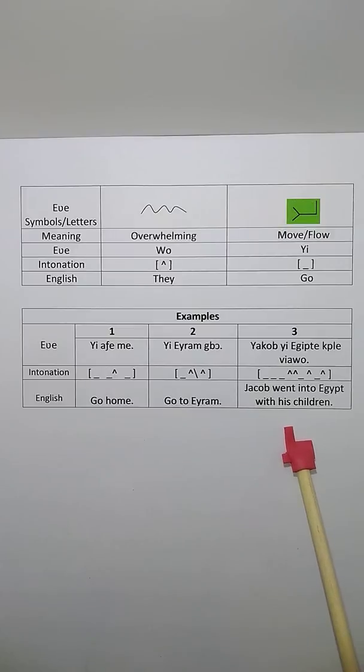And in the third example, you have Jacob went into Egypt with his children. Jacob ye egipte ble via wo. Jacob went into Egypt with his children.